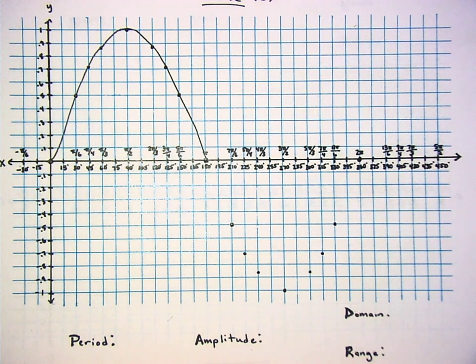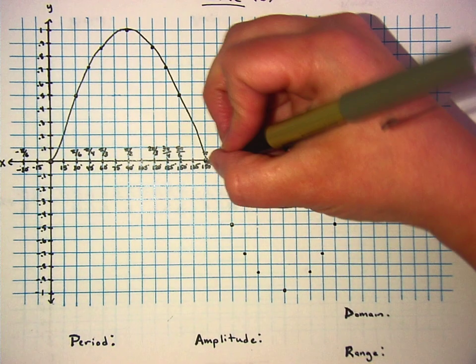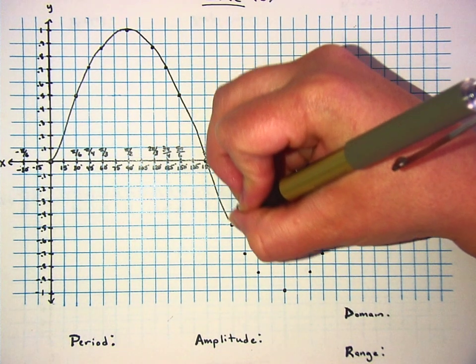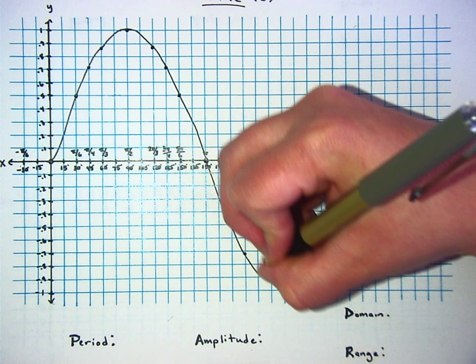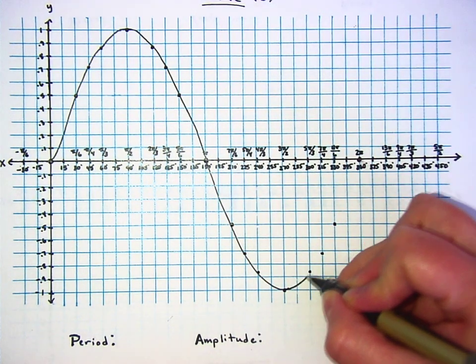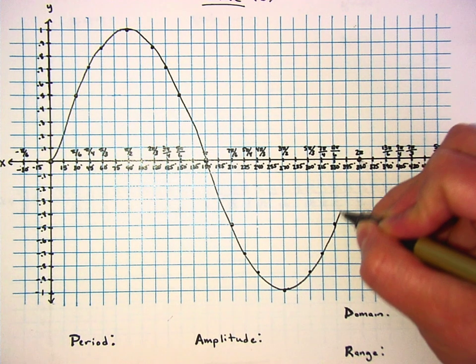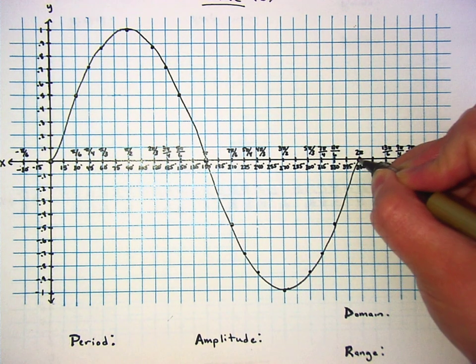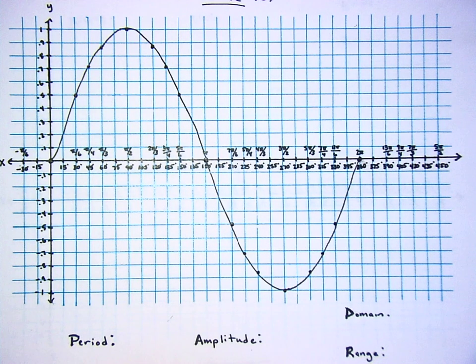You should go back to 0 at 2 pi. You should go to where we were here.